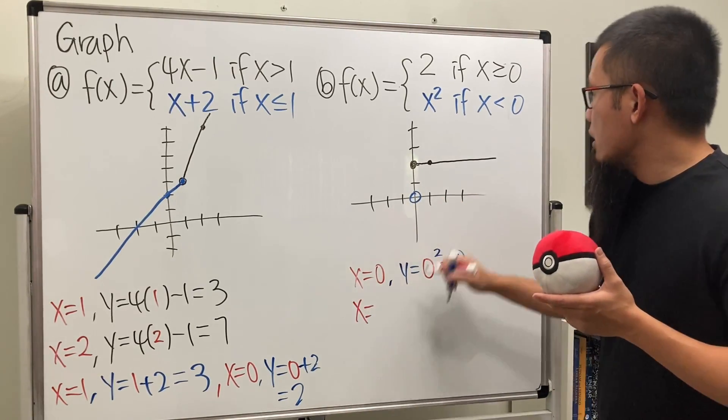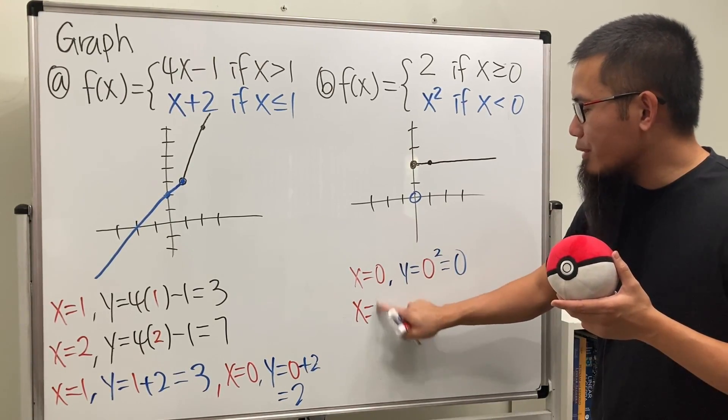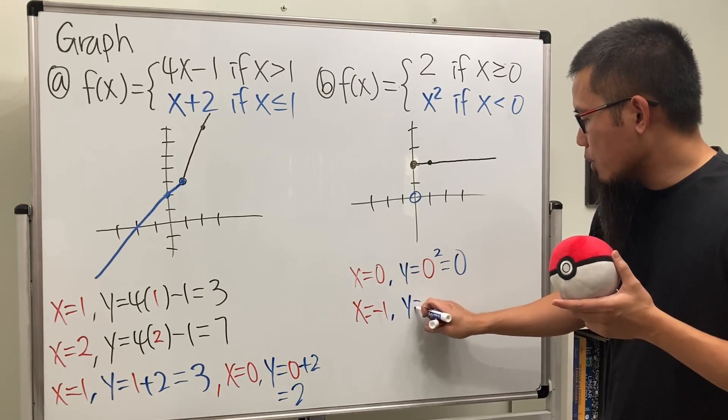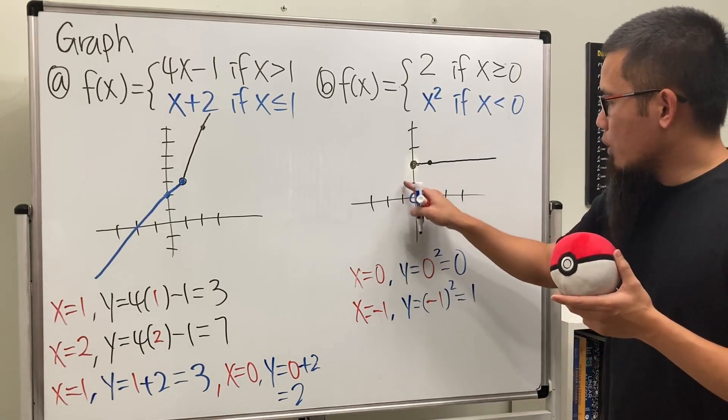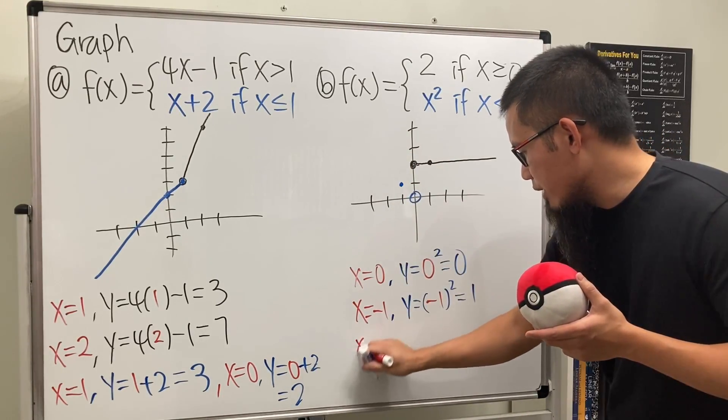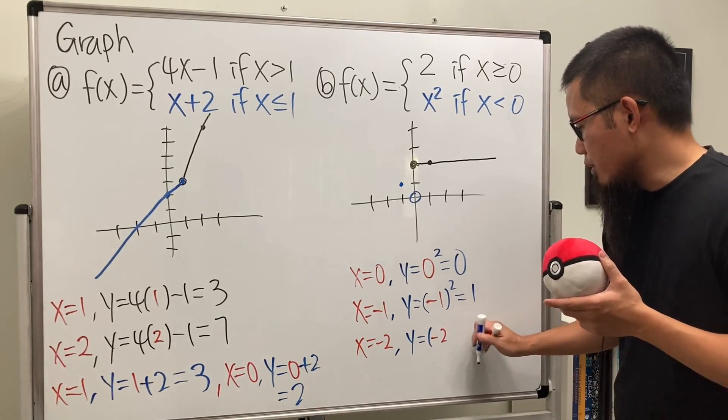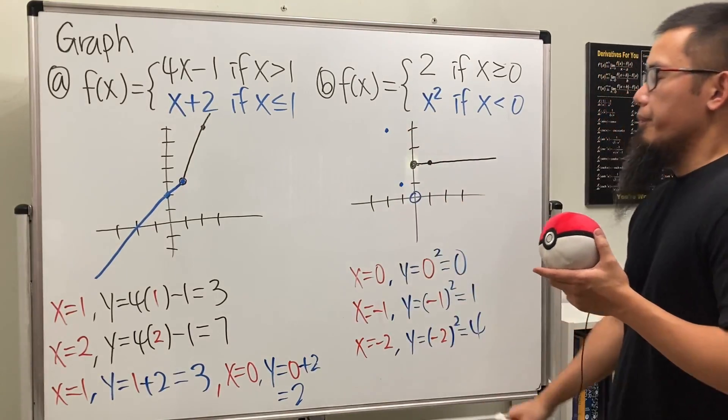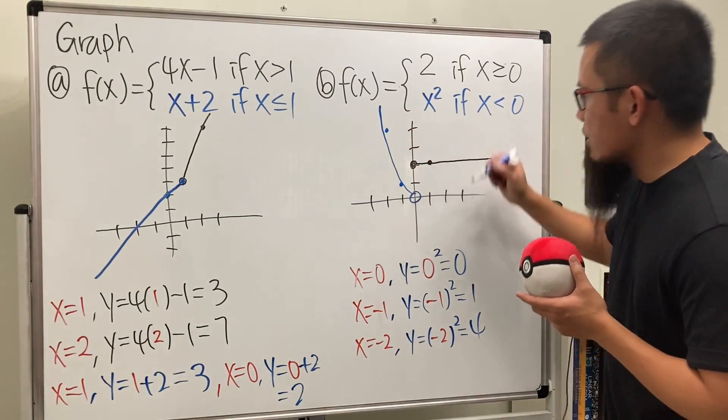And then put the number less than 0, which is negative 1. And we get y equals negative 1 squared, which is 1. So negative 1, 1 right here. But you know it's not going to be a straight line. You can just do another point. Yeah, just to be a little bit more technical. I would say we get negative 2, 4, which is like this. And here we go. We're going to just connect the points together with the curve.